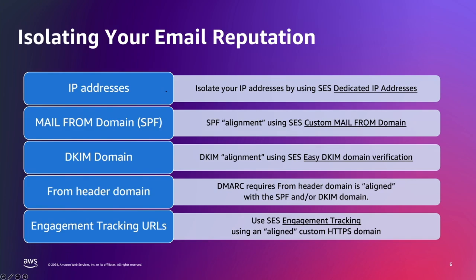To align your engagement tracking URL domains: when you use SES event publishing to capture open and click events, Amazon SES makes minor changes to the email you send. To capture open events, SES adds a one-pixel by one-pixel transparent image in each email, which includes a unique file name for each email and is hosted on a server operated by SES. To capture link click events, SES replaces the links in your emails with links to a server operated by SES. You also have the option to use your own domains rather than domains owned and operated by SES, which creates a more cohesive experience for your recipients. When choosing a domain to use with engagement tracking, it is best practice to use a domain that is aligned with the DKIM domain so that there is a strong authentication signal for this indicator.